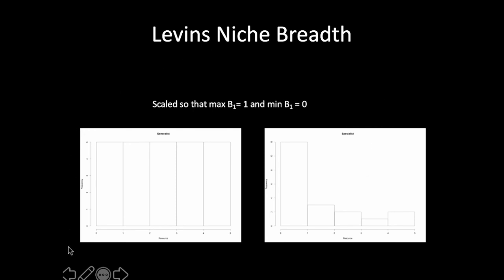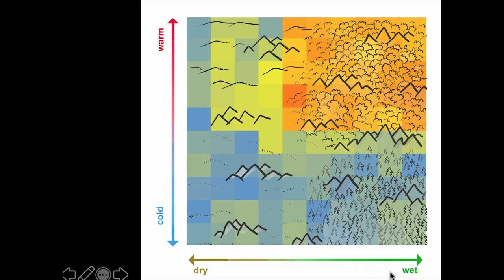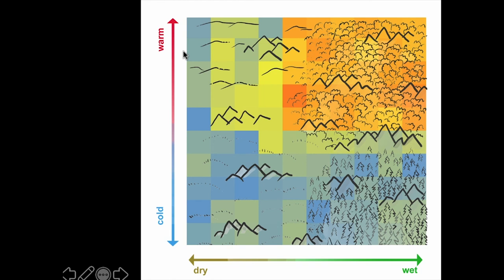Essentially what we're doing when we apply this metric to a niche model is treating the distribution of suitability scores as a two-dimensional histogram. We're assuming that the suitability scores in each grid cell are or are proportional to the probability of observing your species there. Making that assumption, we go grid cell by grid cell and calculate the niche breadth metrics just as we would for a resource utilization histogram. That gives us a single value telling us how broad or how narrow the distribution of suitable habitat for that species is.